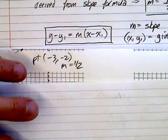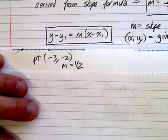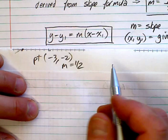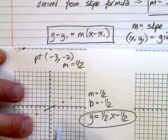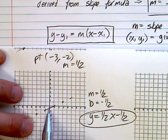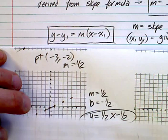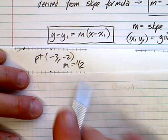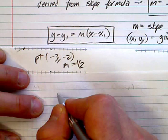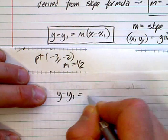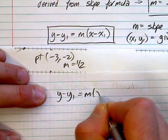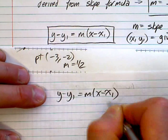However, if you do not have that — if you can't find the y-intercept — then you need another option. And that option is right here: y minus y1 equals m times x minus x1.